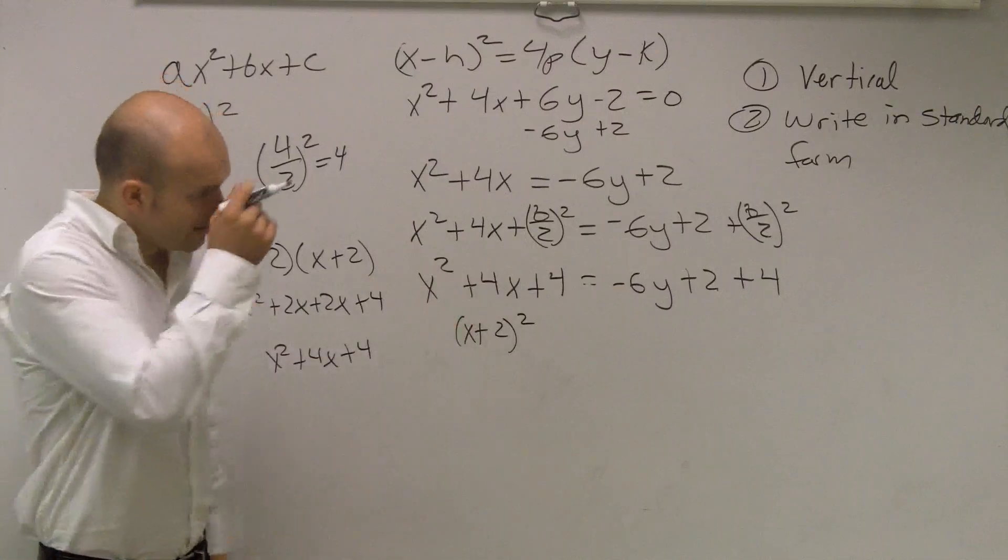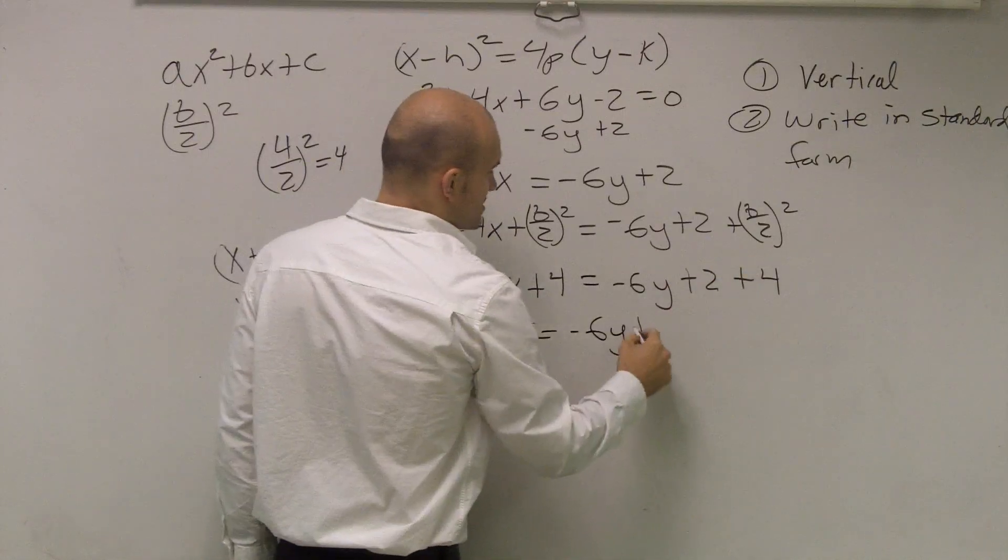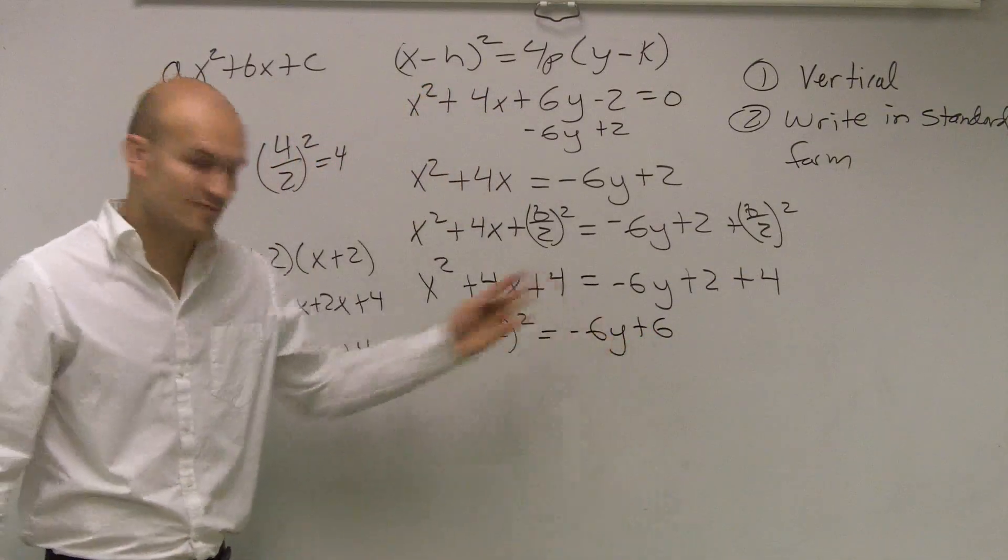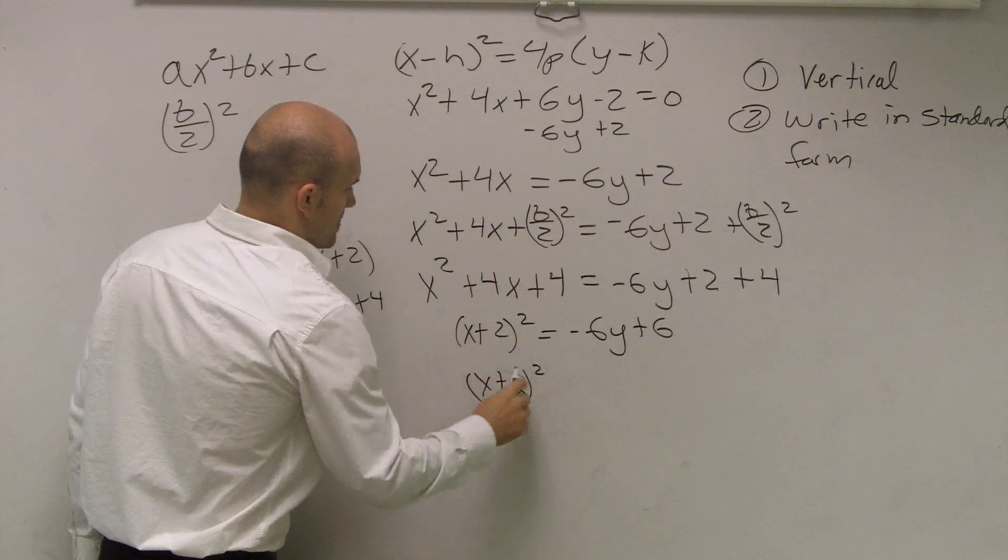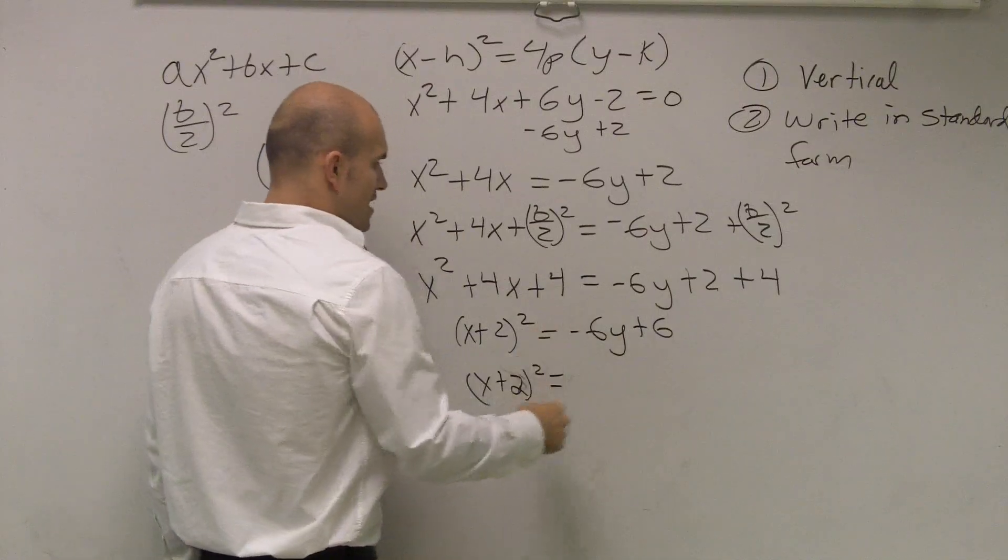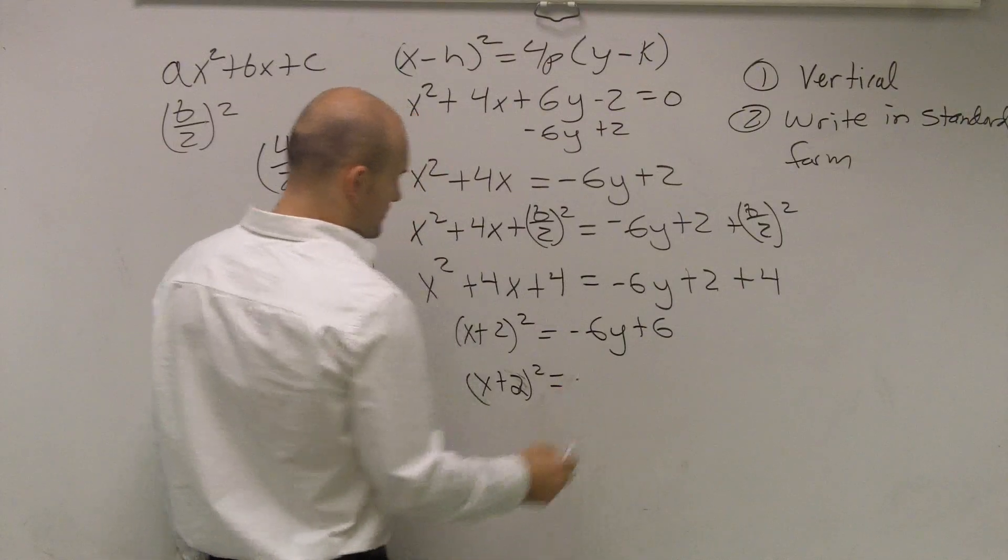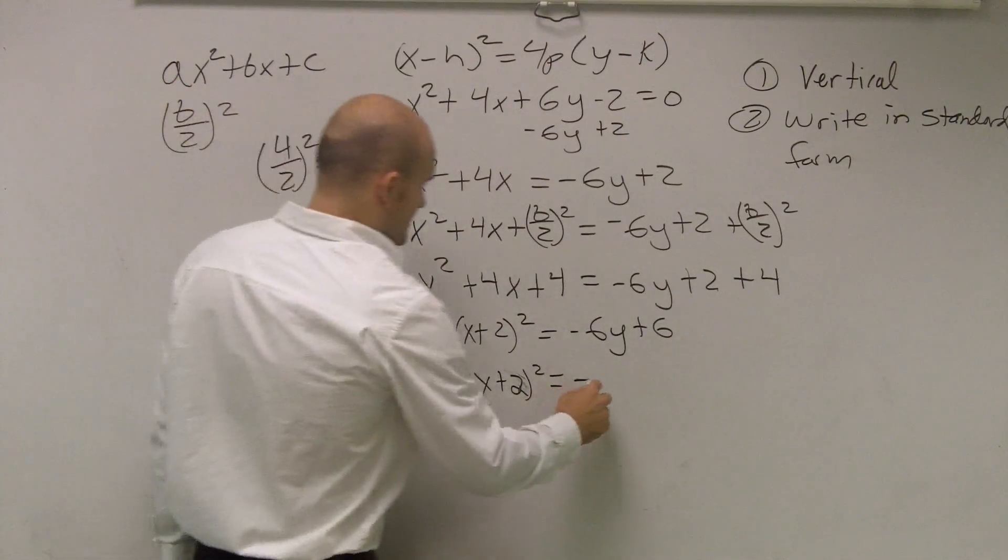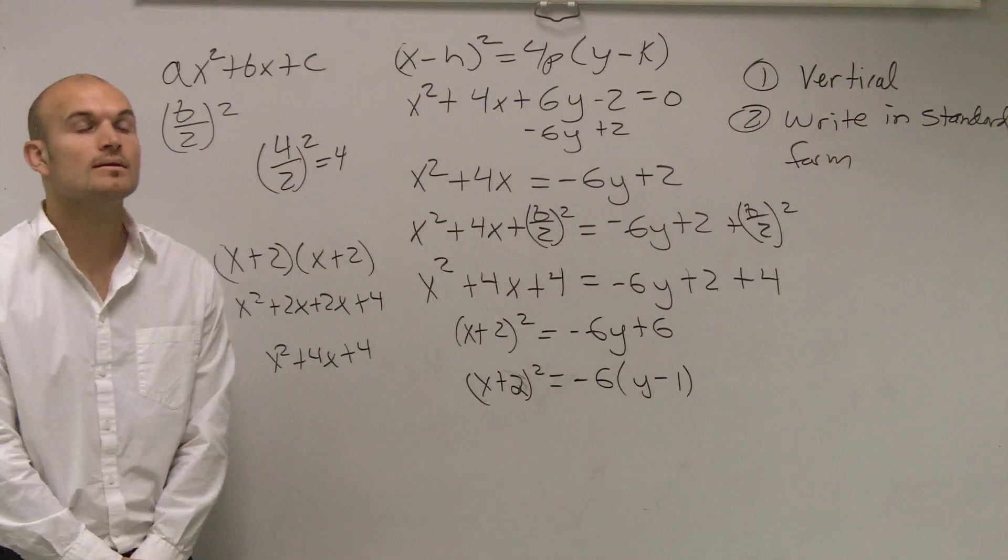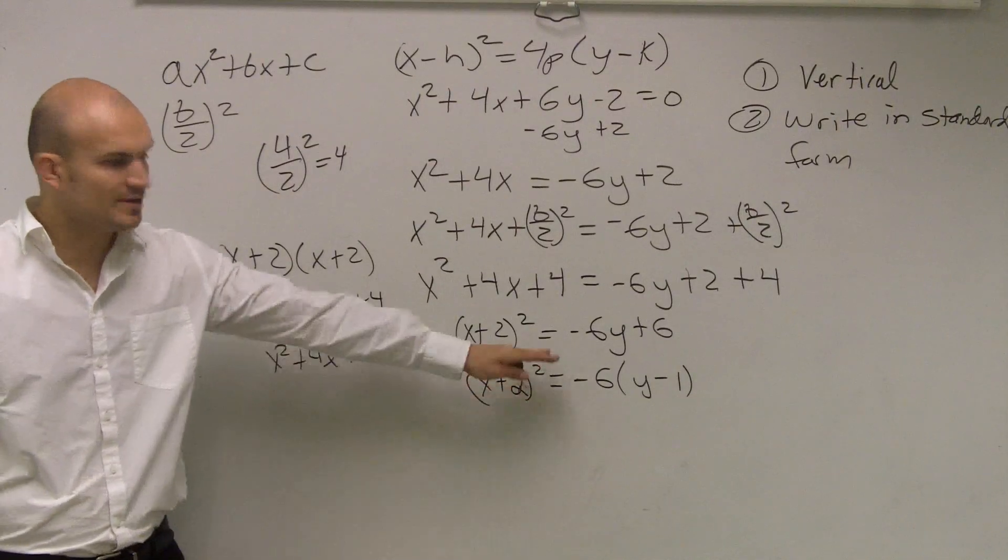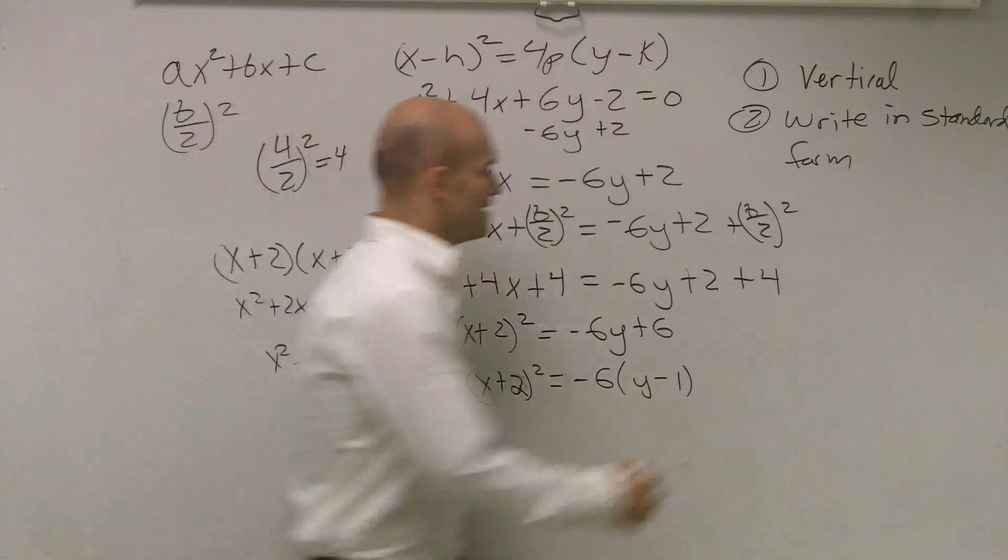So these are just practice with completing the square. Then I look over here and say, how can I rewrite this? Well, I have negative 6y. 2 plus 4 is plus 6. Now we can factor that out. Let's factor out a negative 6. Because let's take a look at it. So now we have it in this format, but is it still exactly in this format yet? No, I don't have it multiplied by 4 yet, right?